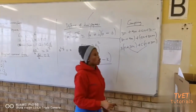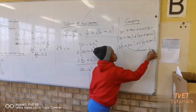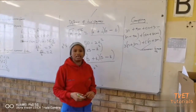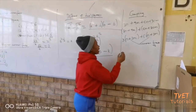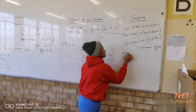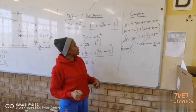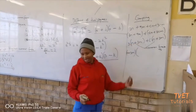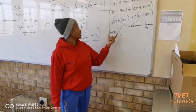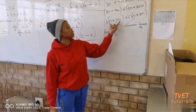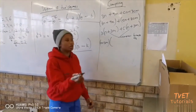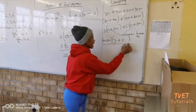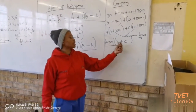Now, n plus 3m is the common bracket. A common bracket is the same as a common factor — we need to take it out. Taking out the common bracket n plus 3m: in the first term we remain with 3, and in the second term we remain with c. Our answer is n plus 3m, into 3 plus c.